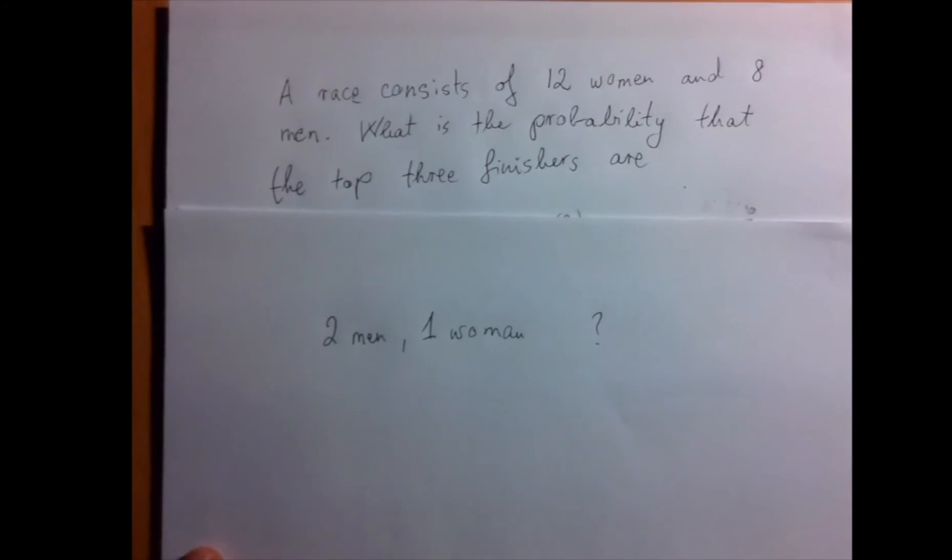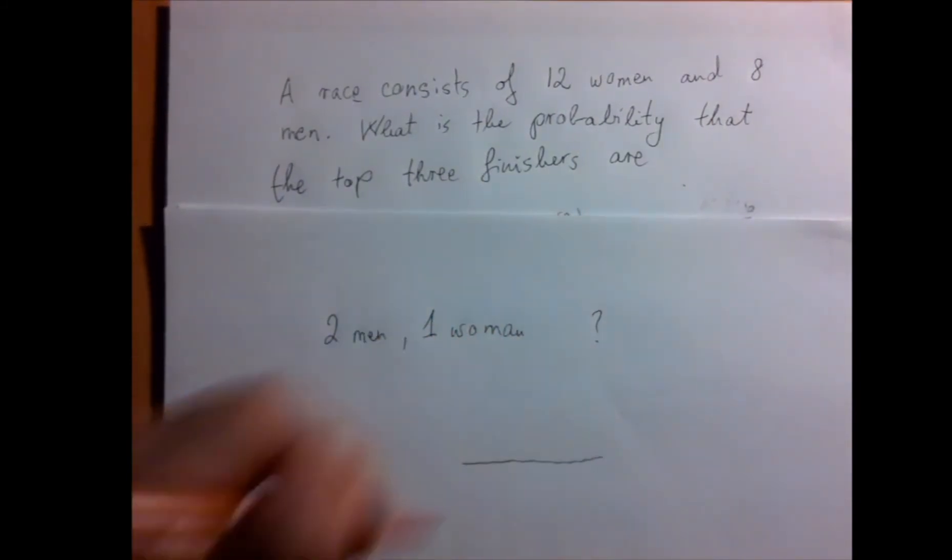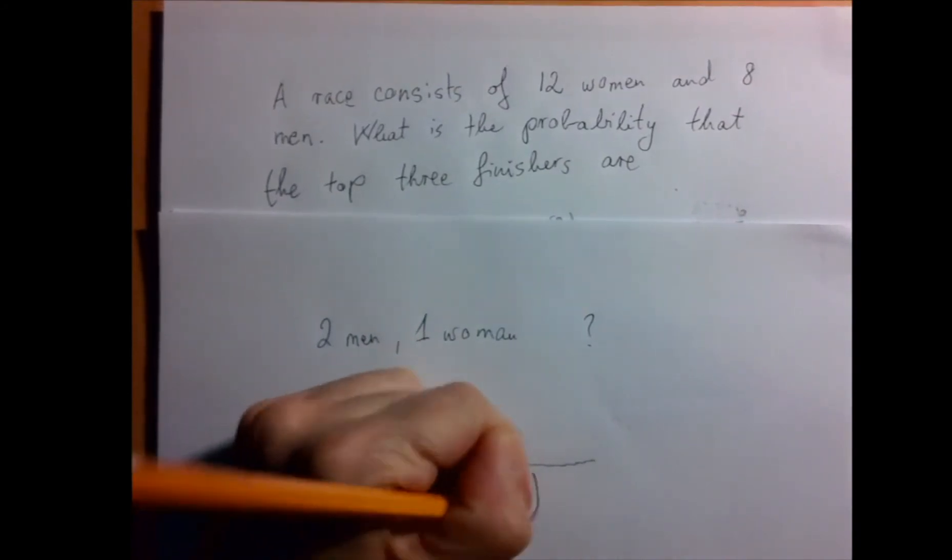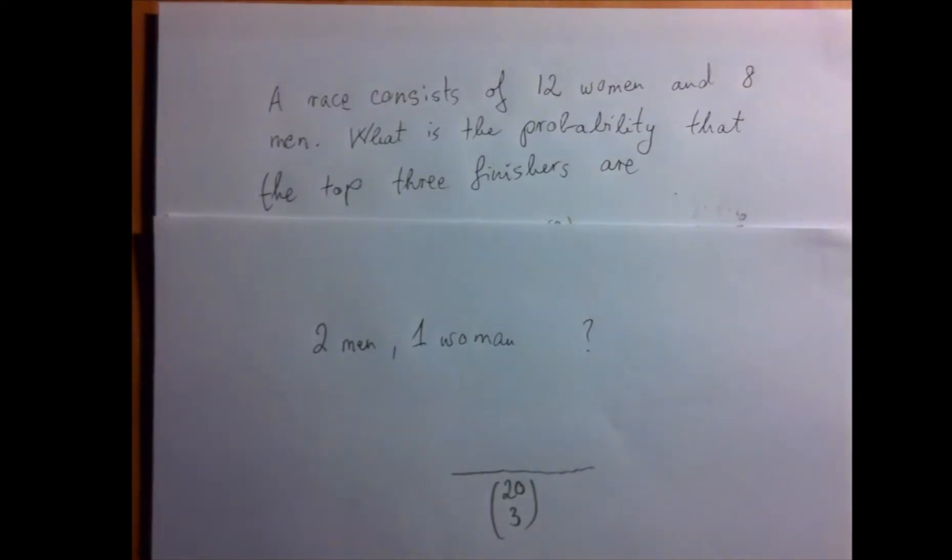So again, a probability problem is really two counting problems. How many out of how many? The total number of outcomes is always going to be the same 20 choose 3. How many different ways can we select the three finishers out of the 20 people? Now we have two selections to make.